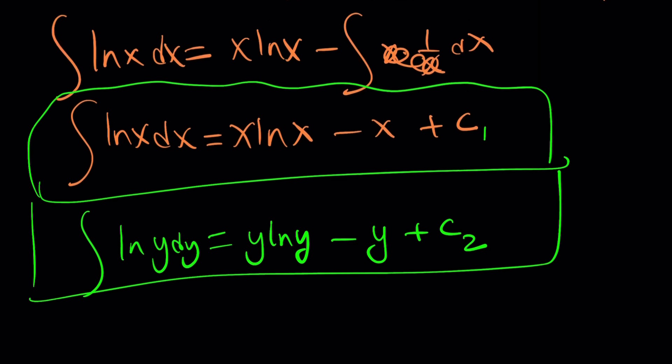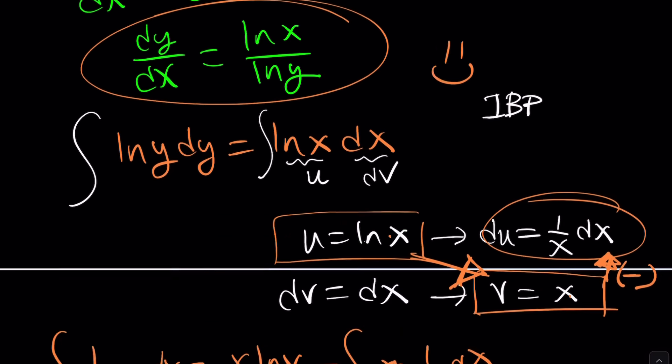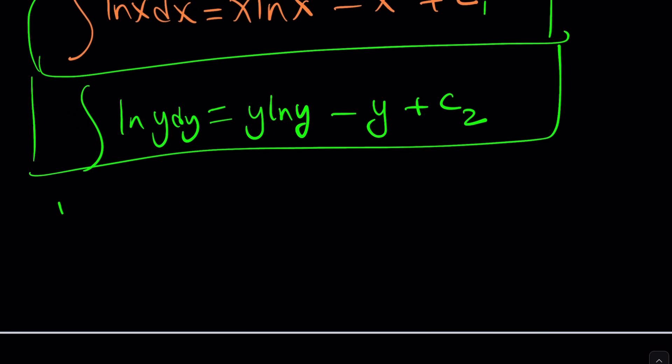Great. Now these two things are equal according to what we got from our separable differential equation. Let's set them equal to each other. y ln y minus y plus c2 equals x ln x minus x plus c1. Now do you really want to solve for y? And is there a way to solve for y? I don't think so. It could be very problematic. But let me give you an idea. Maybe you can continue.